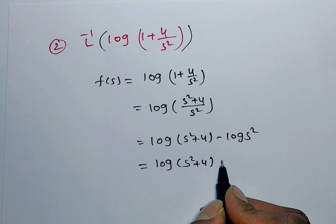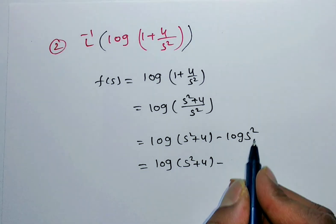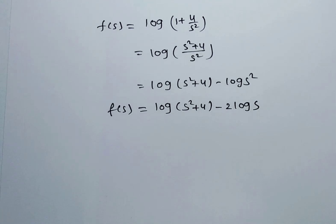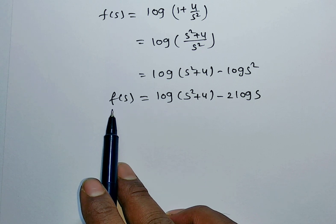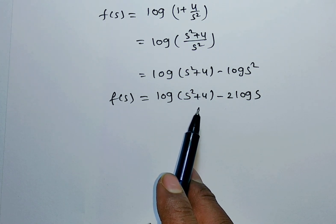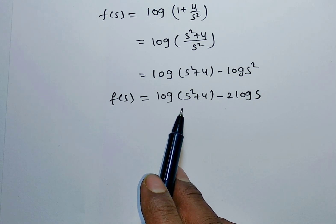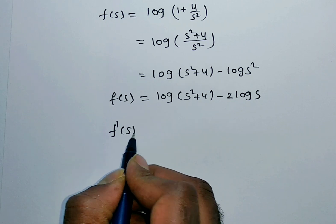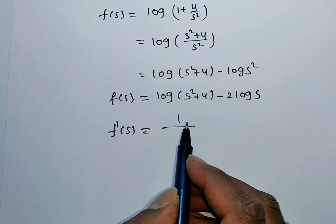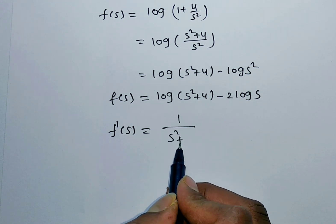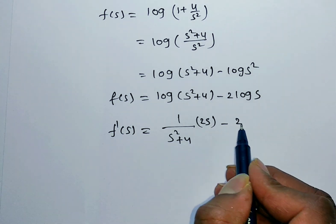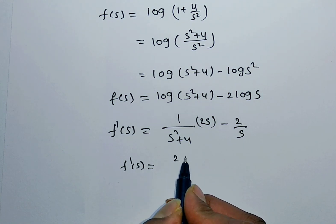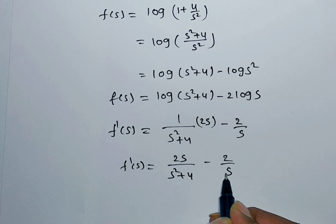Since applying inverse Laplace directly gives logarithmic terms for which there is no basic formula, we differentiate both sides with respect to S. F dash of S equals derivative of log of S squared plus 4 minus 2 log S, which gives 2S by S squared plus 4 minus 2 by S.